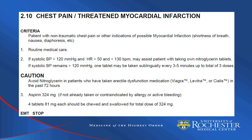The criteria for chest pain or threatened myocardial infarction patients includes those with non-traumatic chest pain or other indications of possible MI, such as shortness of breath, nausea, diaphoresis, etc. All patients should receive routine medical care. In patients where systolic blood pressure is greater than 120 mmHg and heart rate is between 50 and 130 beats per minute, BLS providers may assist patients with taking their own nitroglycerin tablets. One tablet may be taken every three to five minutes up to a total of three doses. BLS providers may also administer aspirin to a total of 324 mg if not already taken or contraindicated by allergy or active bleeding.